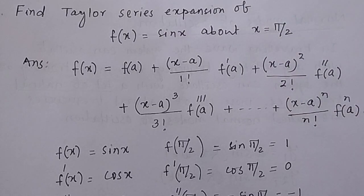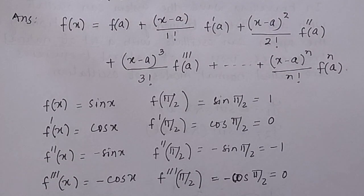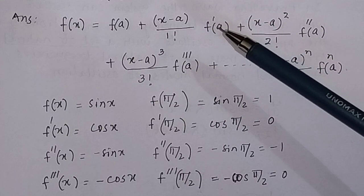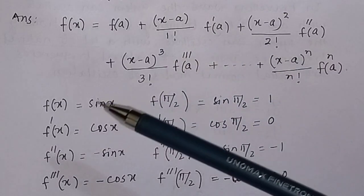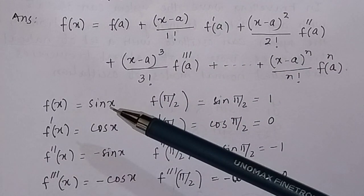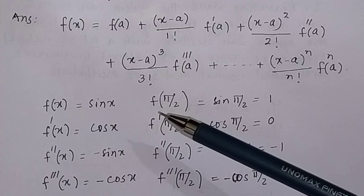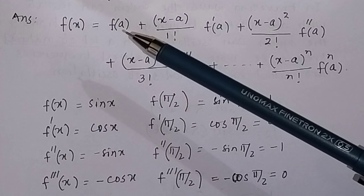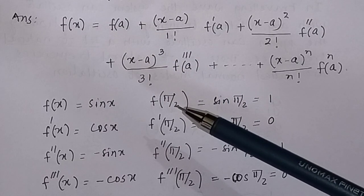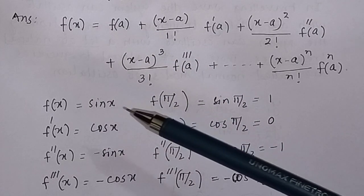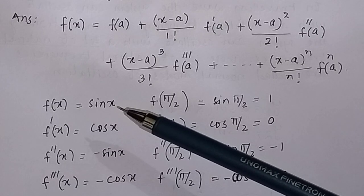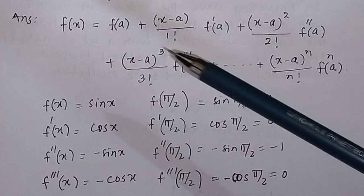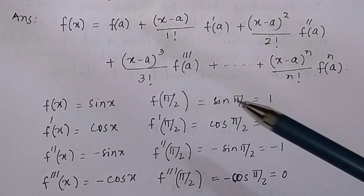So we will find out the value of the function and its derivatives at x = a. The given function is f(x) = sin(x). The first term is the function itself at x = a, so f(π/2) = sin(π/2) = 1. So f(a) = 1.